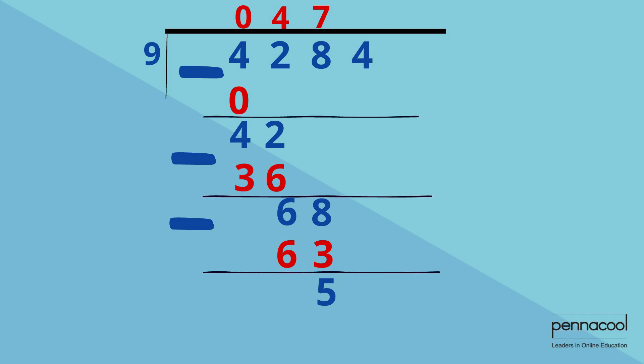That 5 is brought down along with the next number in line to be divided, which is 4. We now have 54 divided by 9.